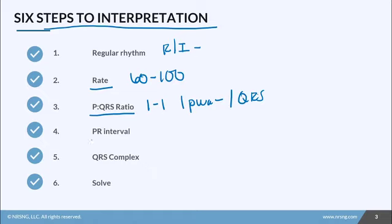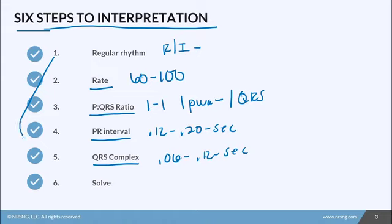In the fourth step you need to look at the PR interval. Is it between 0.12 to 0.20 seconds? In the fifth step you need to look at the QRS complex. Is that between 0.06 to 0.12 seconds?